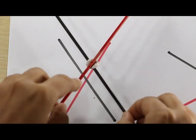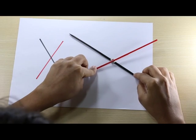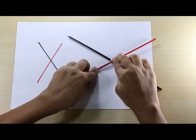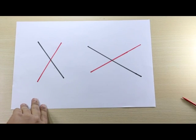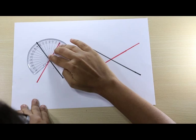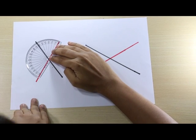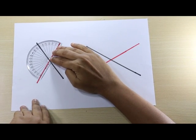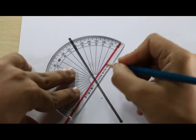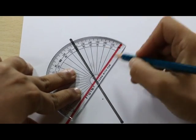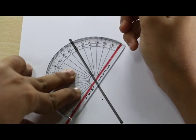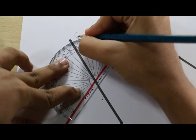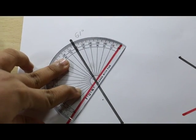One more. Alright, let's now take a protractor and measure the angles that have been formed. I'll place the midpoint of the protractor at the point of intersection of the two lines and the bottom part of the protractor exactly on the red line. As you can see, the angle now formed measures 61 degrees.